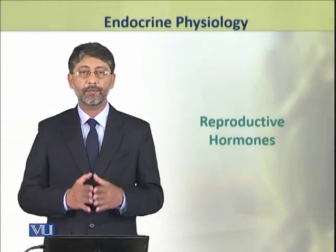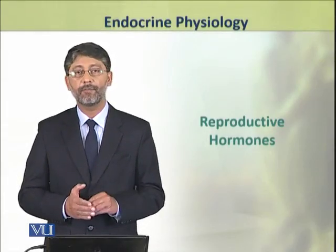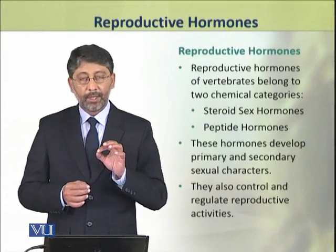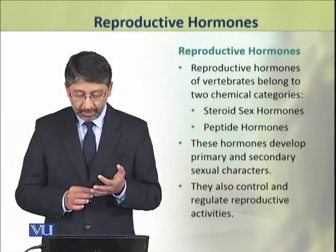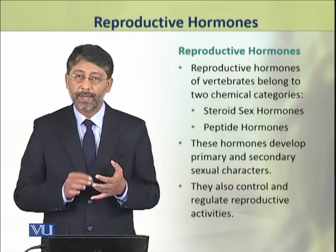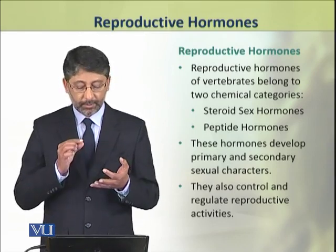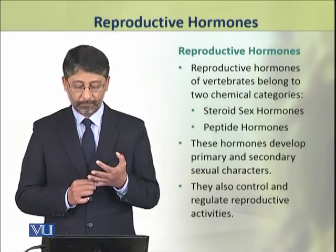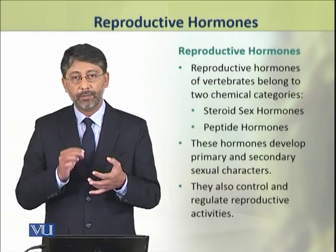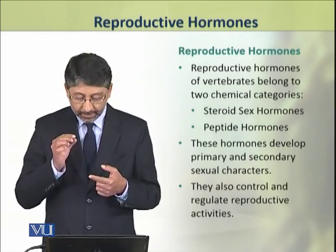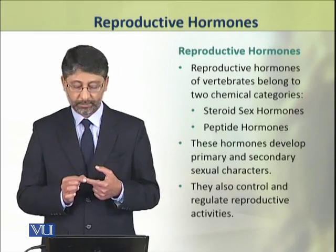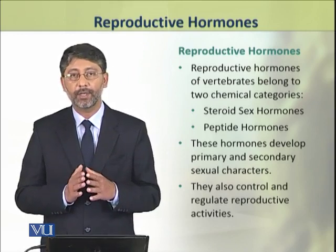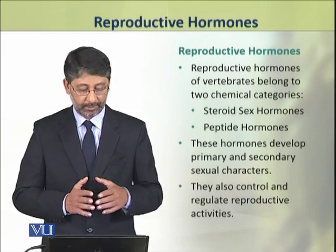Dear students, in this topic we shall discuss the reproductive hormones in detail. The reproductive hormones of vertebrates belong to two chemical categories: steroid sex hormones and peptide hormones. These hormones develop the primary and secondary sexual characters. They also control and regulate reproductive activities of animals.